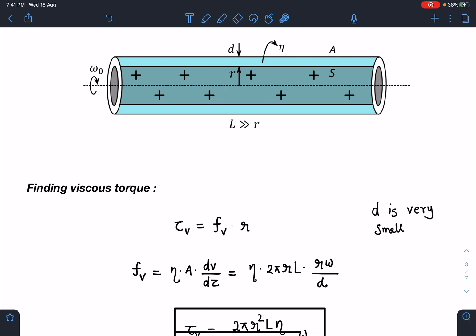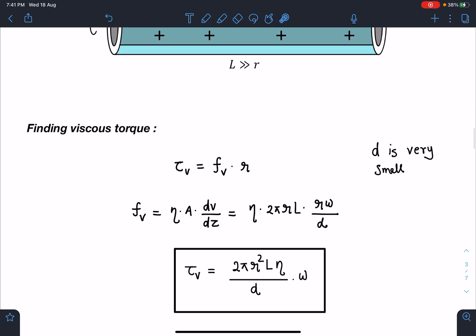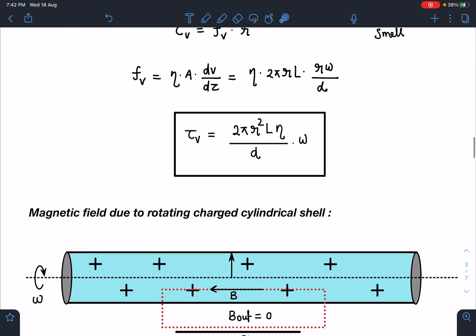This τ_viscous is going to be viscous force multiplied by r. The viscous force in such situation is η·A·(dv/dz), where η is the coefficient of viscosity, A is the area of the layer in contact where this friction force is acting - 2πrL on the surface - and then rω/d. So we get τ_viscous as 2πr²Lη·ω/d.